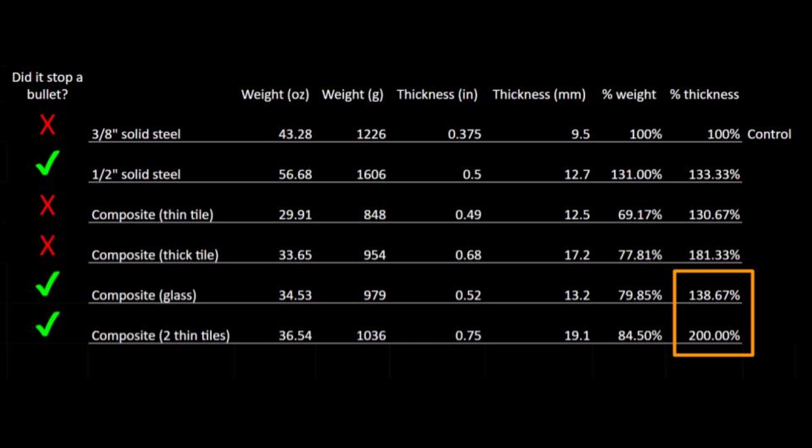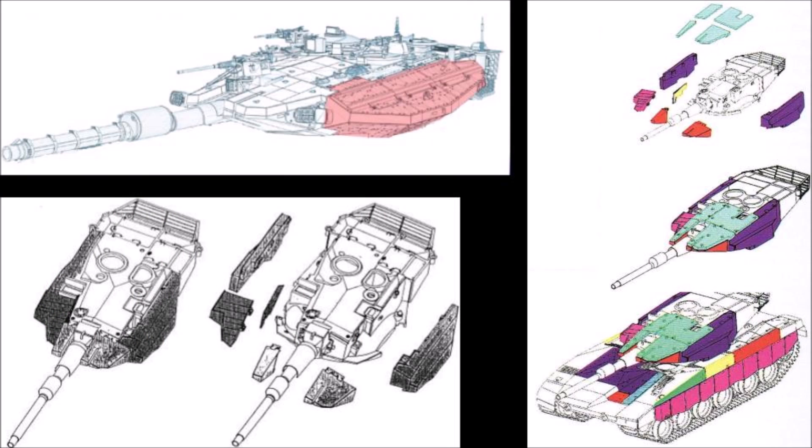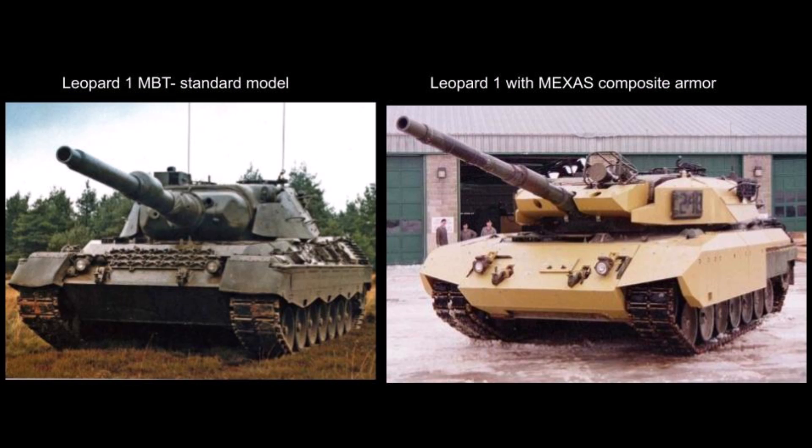Another consideration that our test reveals is that composite armor is substantially thicker than denser homogeneous armor, with the glass and double-tiled targets being 38 and 100% thicker than the steel control. This can become an issue when the armor is spaced around an entire military vehicle. The increased bulk of composite armor results in armor with an increased surface area for the same internal area. This causes design challenges to avoid a net increased weight when using all-around composite armor.